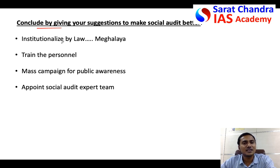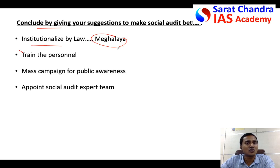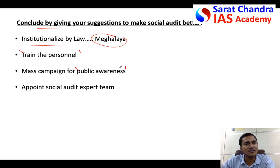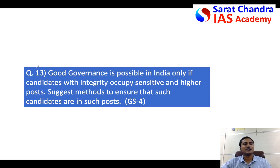To conclude this answer, you can use a suggestions-type conclusion — say that social audit has these many benefits, that is why we have to include social auditing in all government mechanisms in India, just as Meghalaya has done. In order to make social audit successful, you have to train the personnel of different government departments to be sensitive to this kind of auditing, make people aware through mass campaigns, and appoint a social audit expert team to train people in different districts.